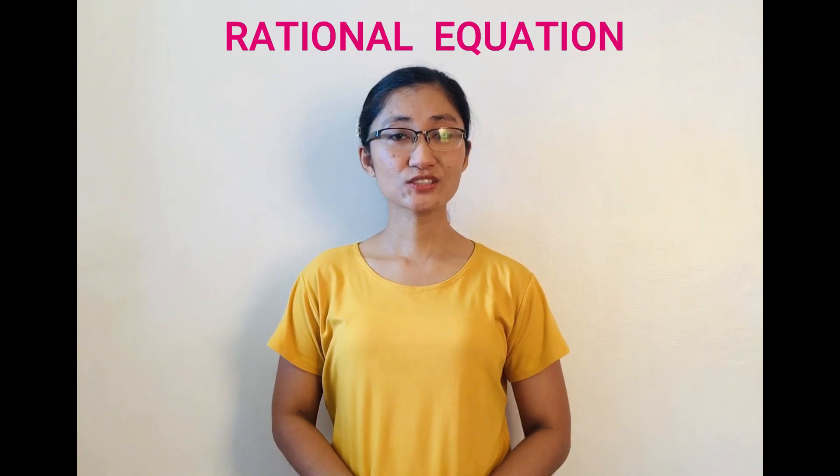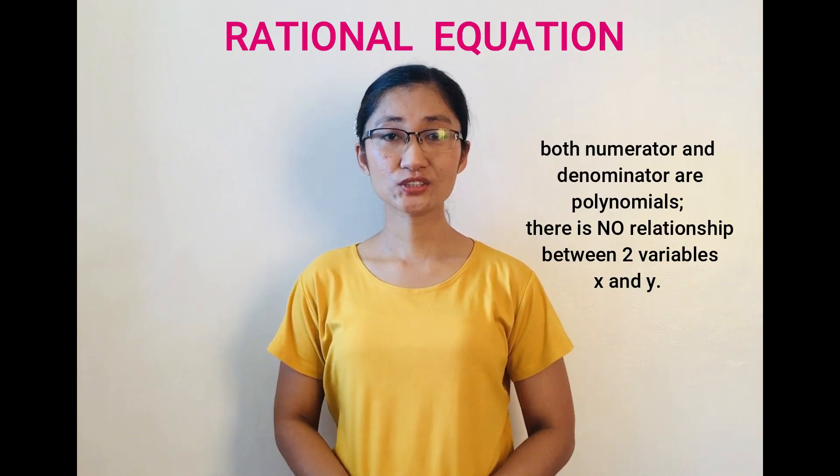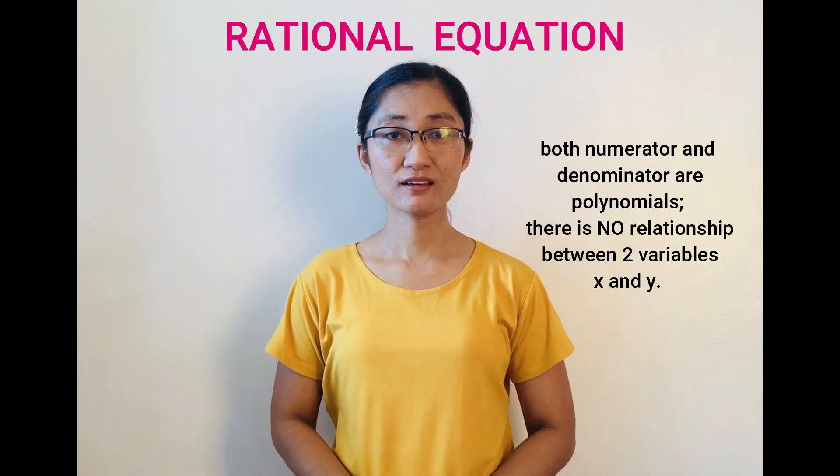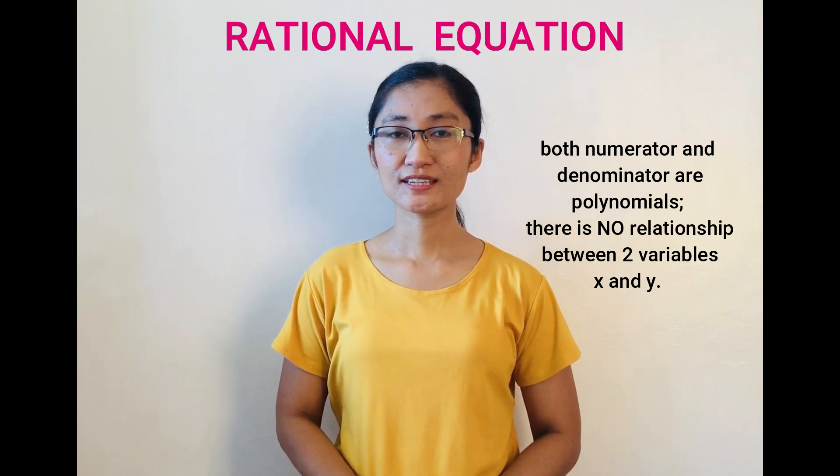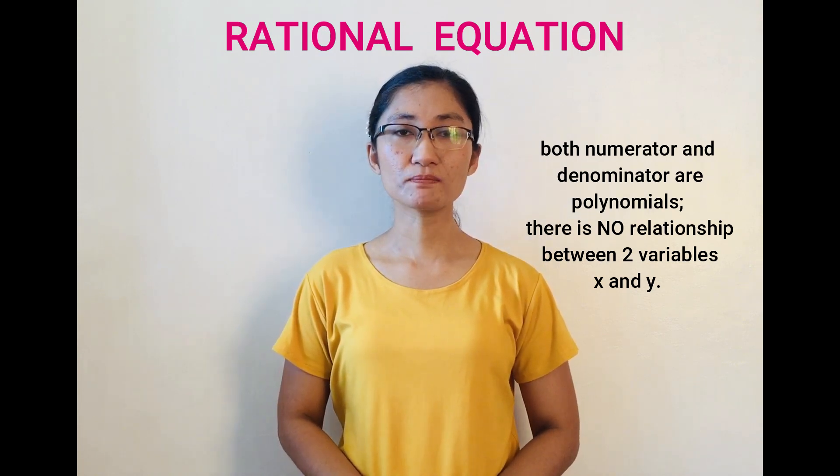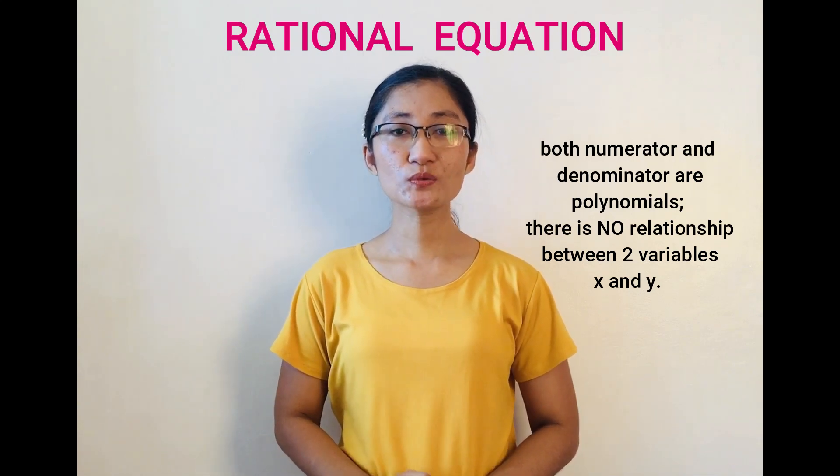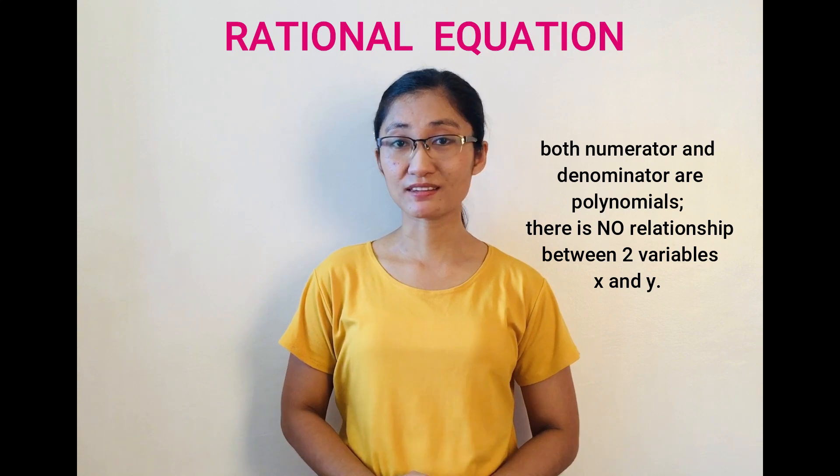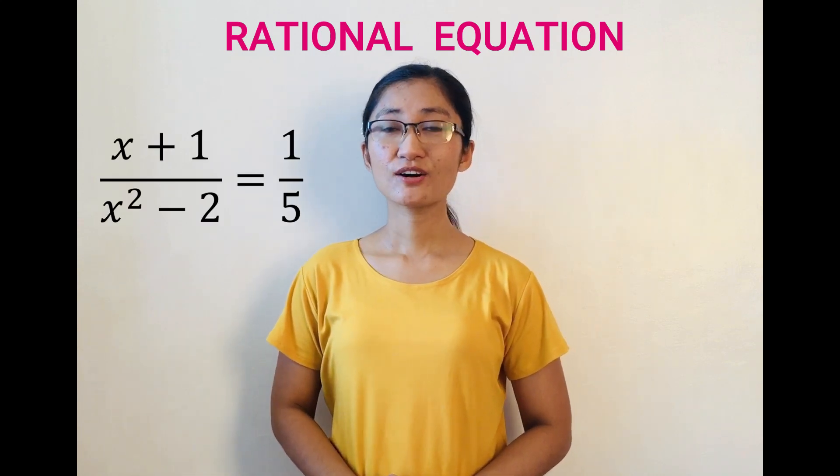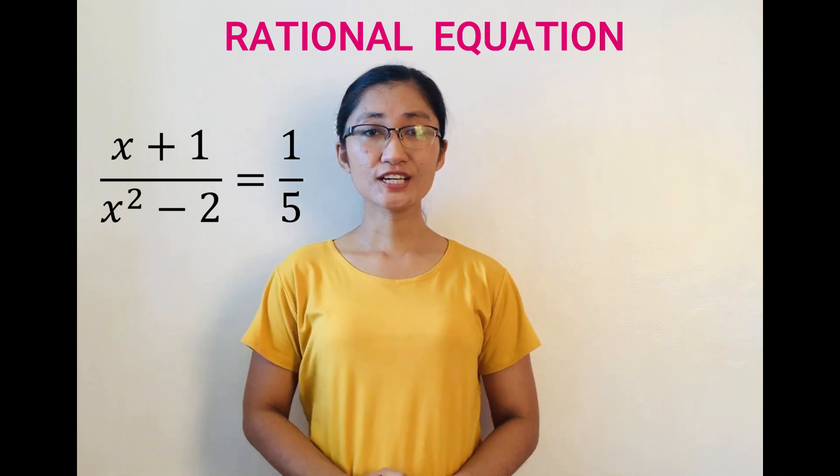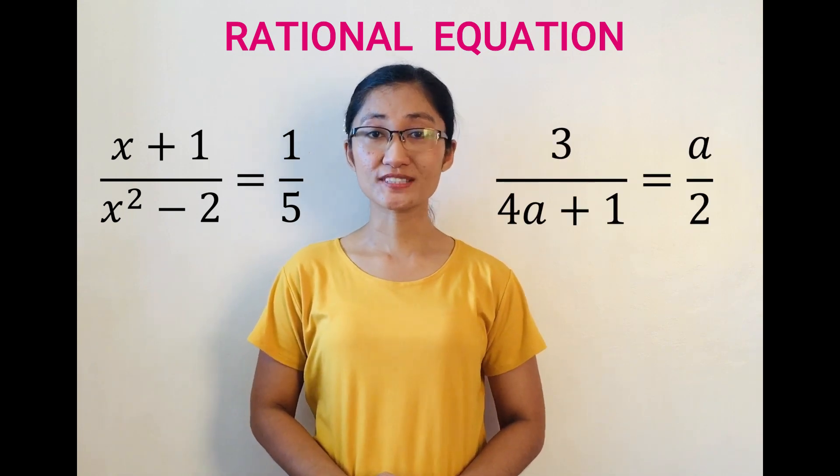On the other hand, a rational equation has a fraction where both numerator and denominator are polynomials as well, but it is a mere equation. It doesn't show any relationship between the independent and dependent variables which are usually represented by x and y respectively. Like in the case of (x+1)/(x²-2) = 1/5, and 3/(4a+1) = a/2.